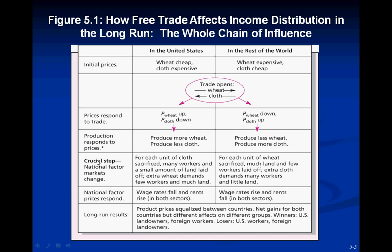The crucial step is the national market adjustment: for each unit of cloth sacrificed, many workers and a small amount of land are laid off. Extra wheat demands few workers and much land, so the rental rate for landlords will increase while the labor wage rate will decrease. In the rest of the world, for each unit of wheat sacrificed, much land and few workers are laid off. The extra cloth demands many workers and little land since it's labor-intensive, so labor wages will rise and landlord returns will fall.